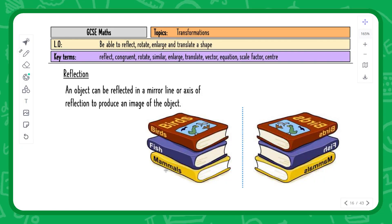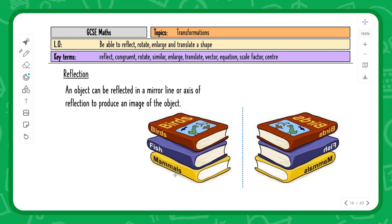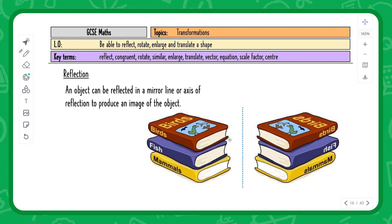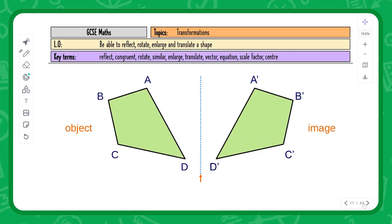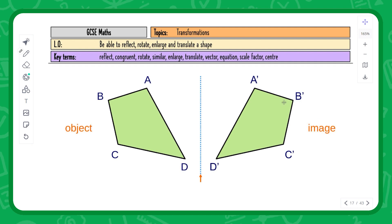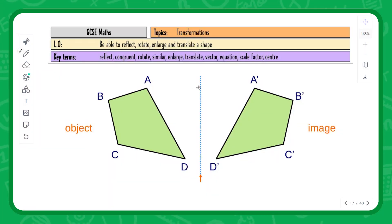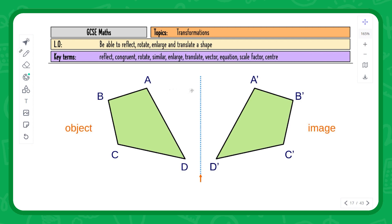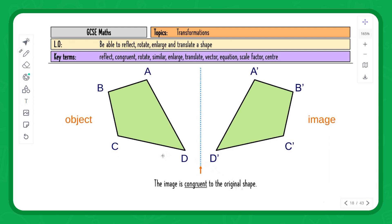If the mirror line is diagonal the equation is y equals x, and the other diagonal is y equals minus x. The distance from each corner of the original shape to the mirror line must equal the distance from the line to the corresponding point on the new image — for example, six squares in means six squares out. The shapes are congruent, meaning exactly the same size and shape even if flipped or rotated.